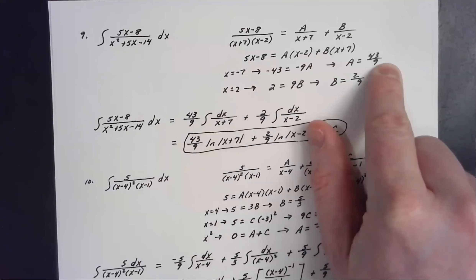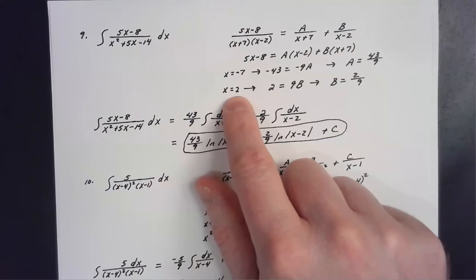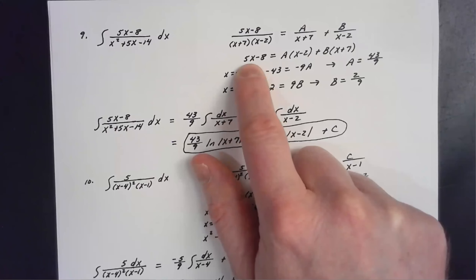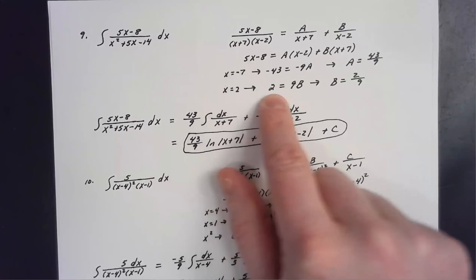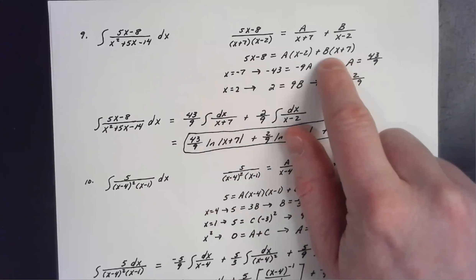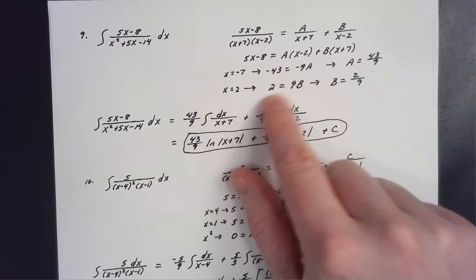To solve for B, let x equal two. On the left, five times two minus eight equals two. On the right, two plus seven times B gives nine B equals two, so B = 2/9.